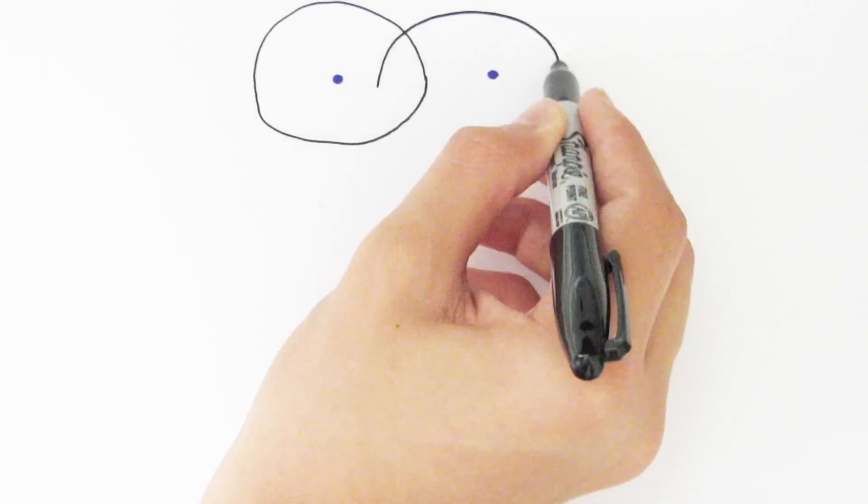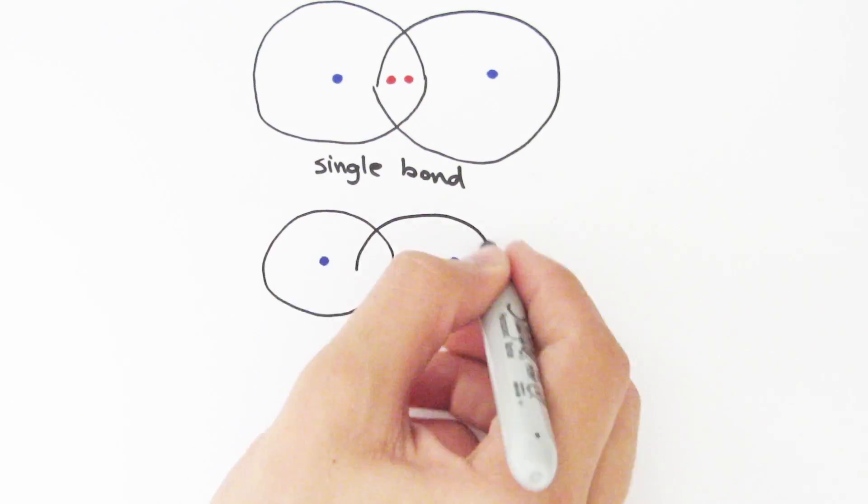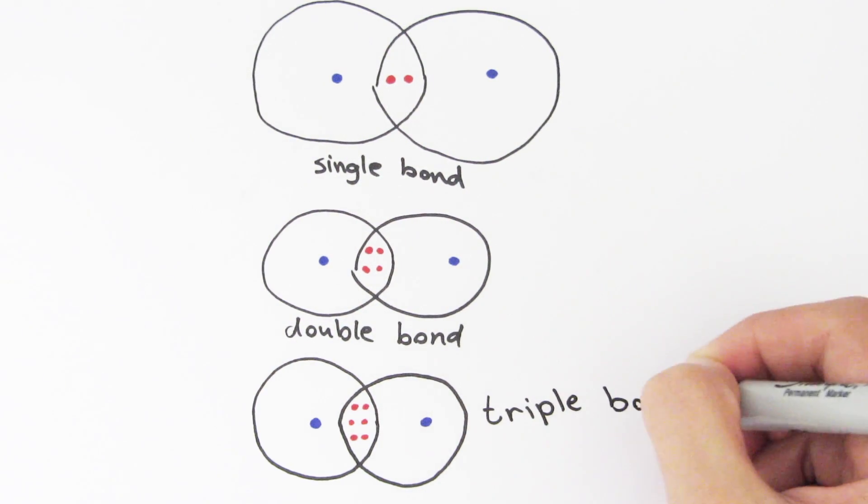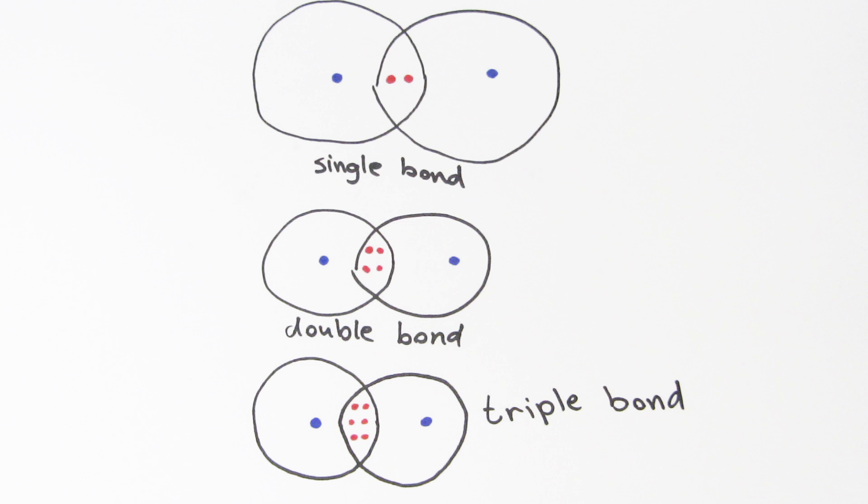Covalent bonding is basically just a sharing of electrons. In methane's case, it's single bonded, but it can also be double bonded or triple bonded, which is the limit for bonding. Single bonding is where the atoms share two electrons, double bonding is where they share four, and triple bonding is where they share six.